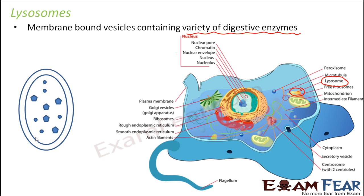Since all the digestive enzymes are located inside the membrane-bound lysosomes, it helps the cell to keep these enzymes isolated so that inappropriate digestion activity cannot take place. There are so many digestive enzymes that they can digest anything and everything. So in order to prevent that, they have been isolated and kept in separation inside the membrane-bound lysosomes.